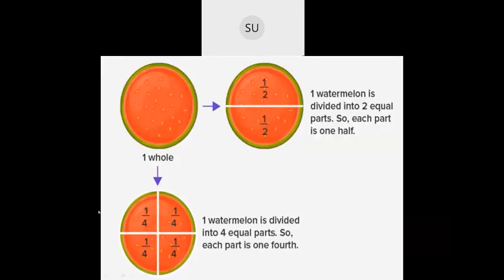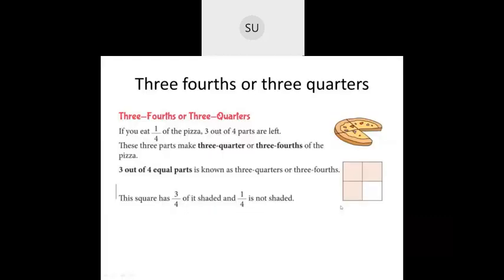So this is a whole — an entire thing. If I take the entire circle together, it is a whole, that is one. If I cut this circle into two parts, this will be one half and this will be another half. Now if I cut this circle further into four equal parts, each part is one quarter — this is one quarter, this is another quarter, this is one quarter and this is another quarter. So this is whole, half, and quarter. Now this watermelon is divided into two equal parts — each part is one quarter or one fourth, read as one fourth or a quarter.